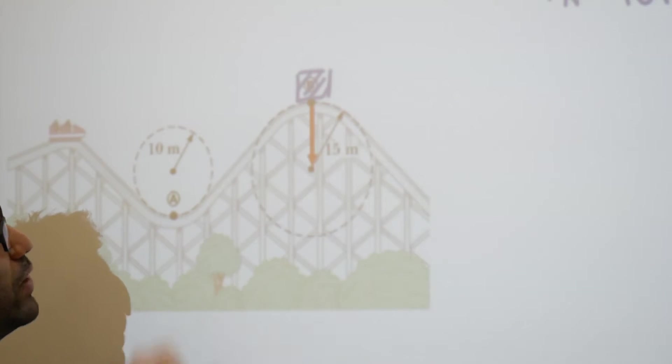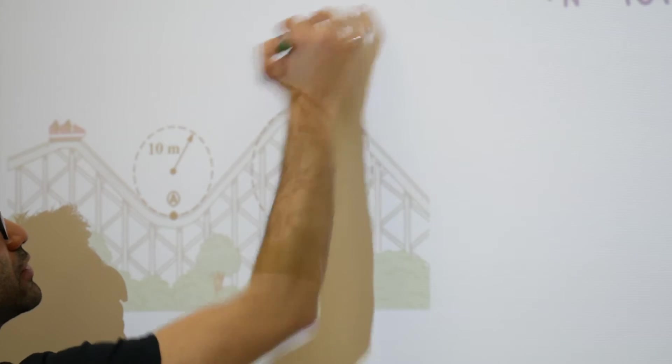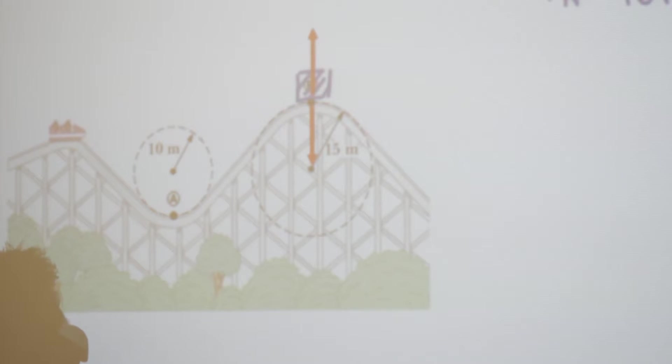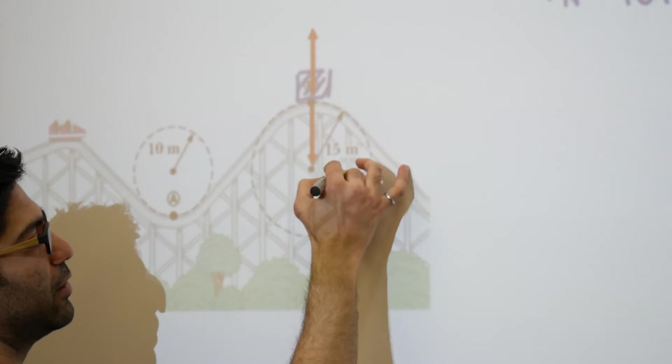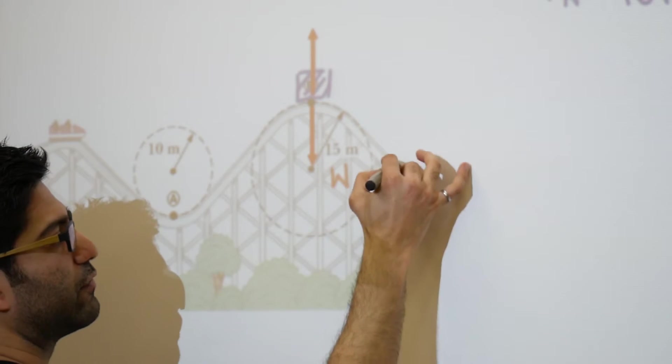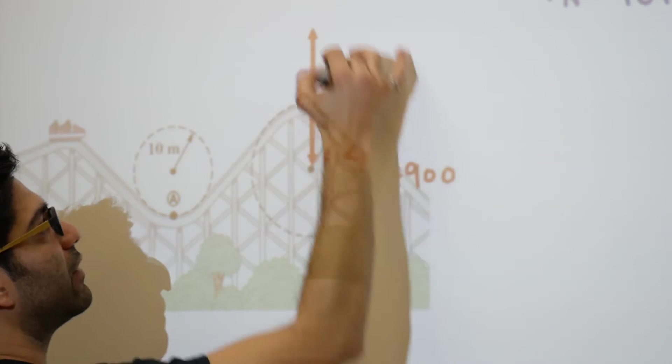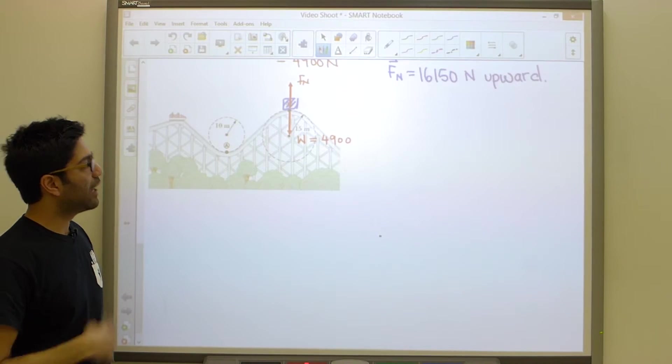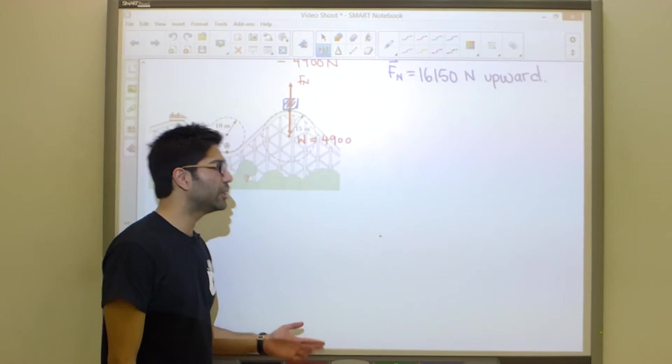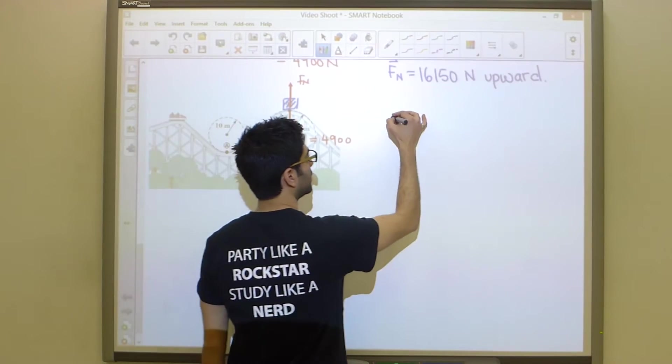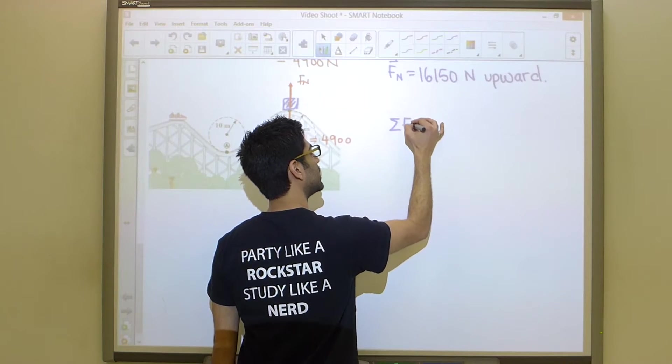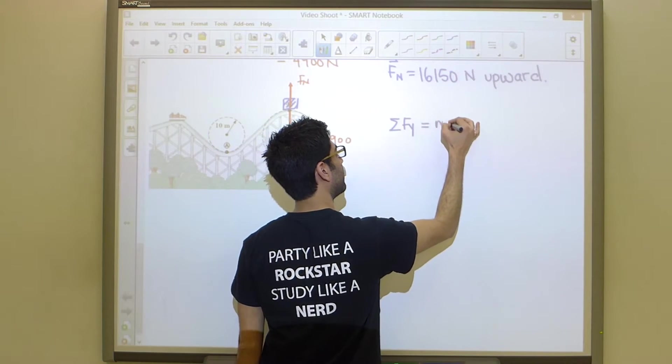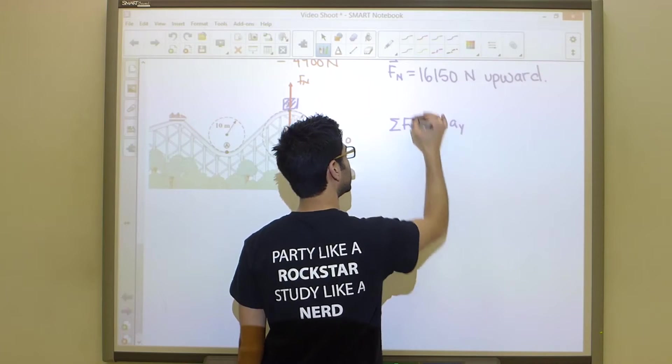We have the weight straight down and the force of the track straight up. These are the only forces acting on this guy at the moment. We have our weight W, and it's not going to change - it's still 4900. And we have our force of the track pointing upwards.